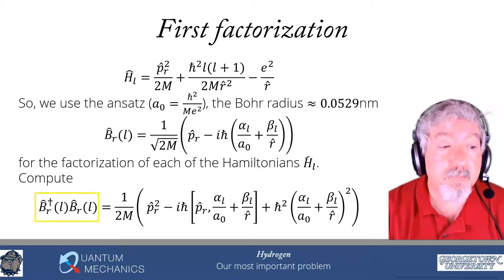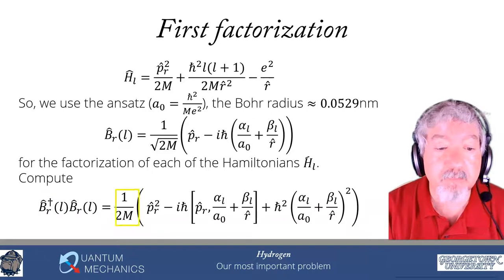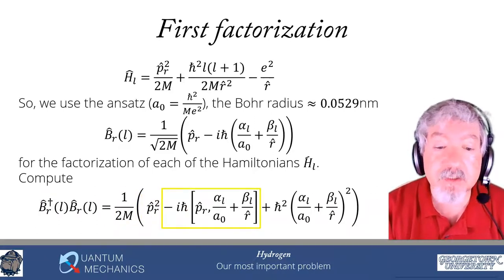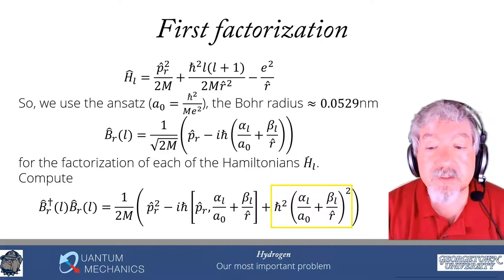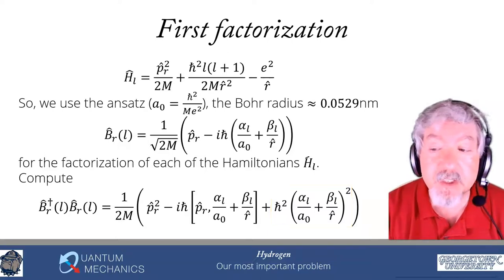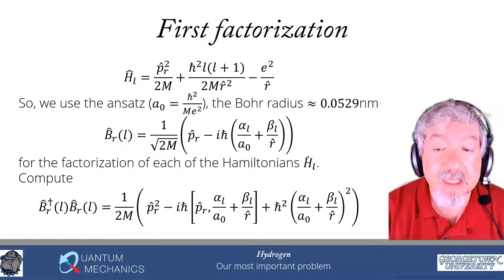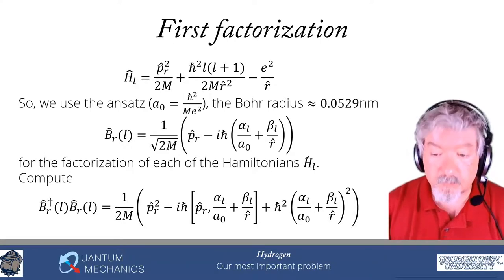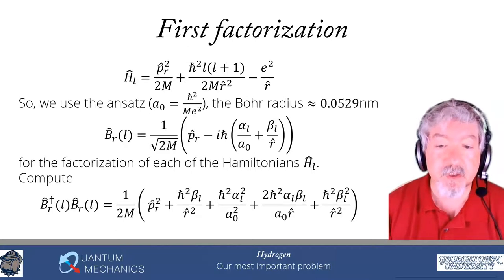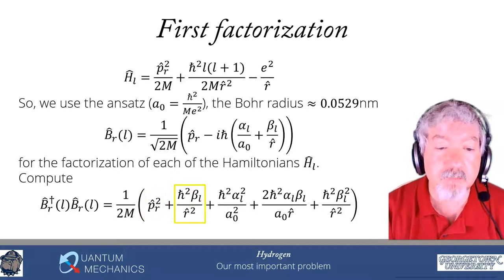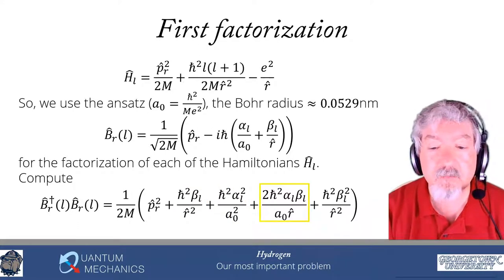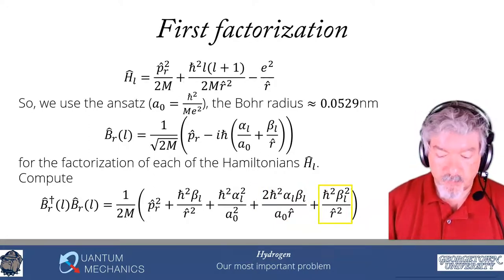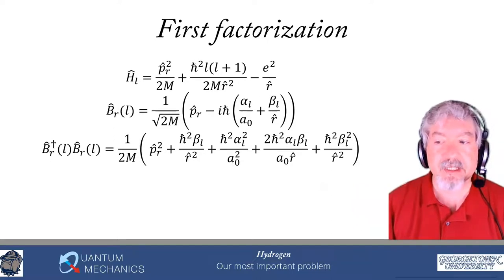We compute B†_r(L) B_r(L), which equals 1 over 2m times: P_R squared, minus i h-bar times the commutator of P_R with (alpha_L over a_0 plus beta_L over R), plus h-bar squared times (alpha_L over a_0 plus beta_L over R) squared. The commutator of P_R with a constant is zero. The commutator of P_R with 1 over R is i h-bar over R squared. Foiling out the square of the super potential gives h-bar squared alpha_L squared over a_0 squared, plus 2 h-bar squared alpha_L beta_L over a_0 R, plus h-bar squared beta_L squared over R squared.